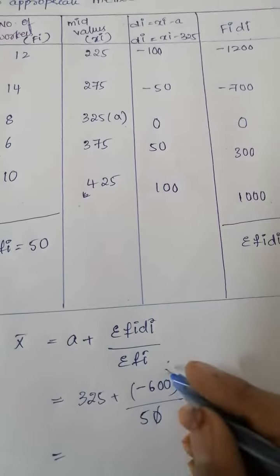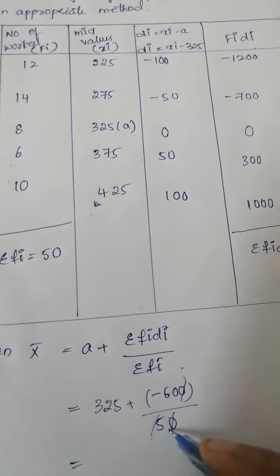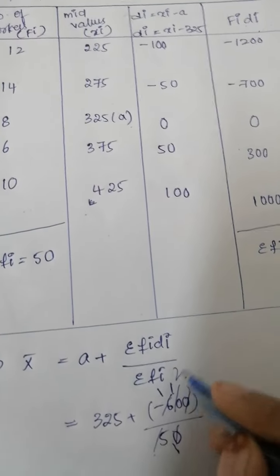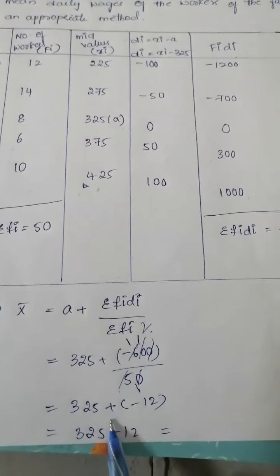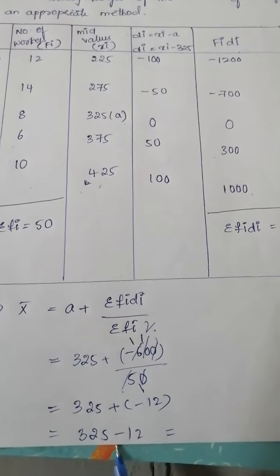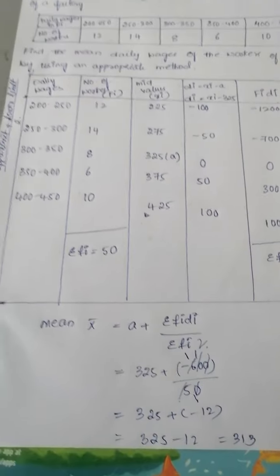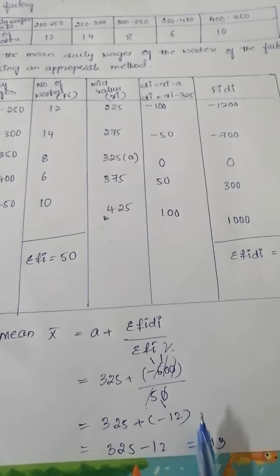Zero cancel, minus 60 by 5. 5 ones are 5. 325 plus into minus is minus, 325 minus 12, how much? 330. So daily wages of the workers is 330.